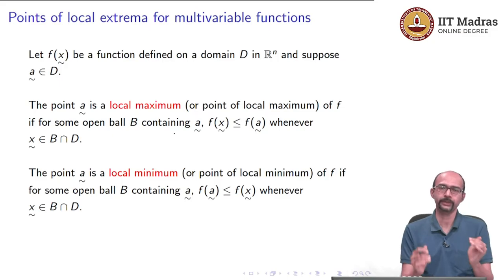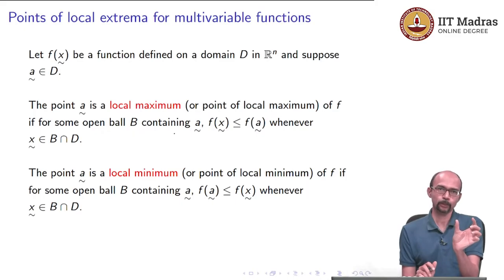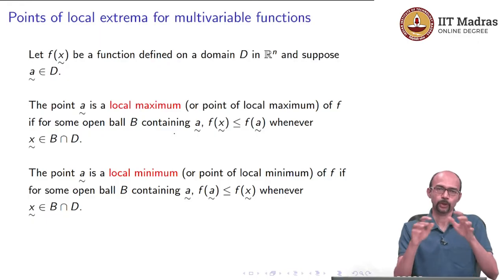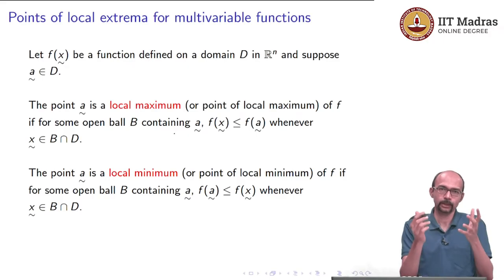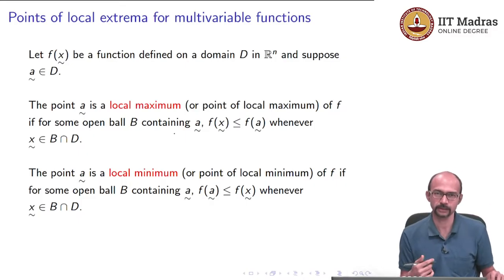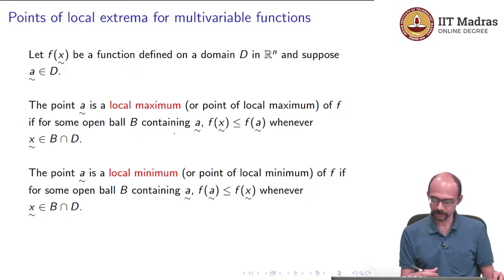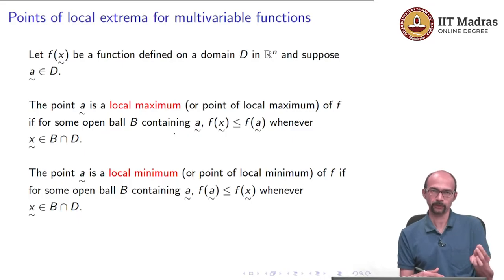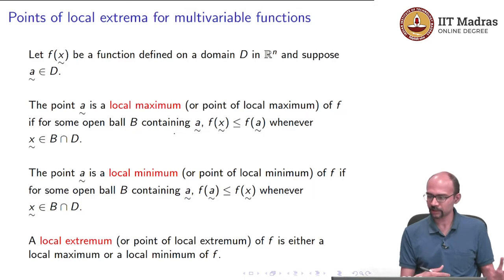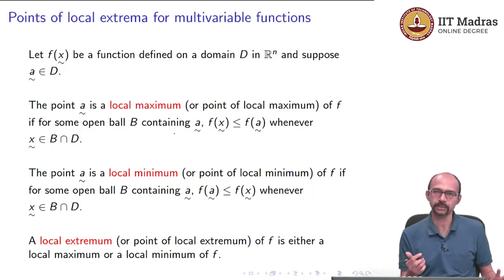For one variable we had open intervals — if on a small open neighborhood the point has the least or largest value. Here instead of intervals we have open balls. In R² you have a disc, in R³ you have a ball (a sphere), and in Rⁿ it is all points within a fixed distance from a center point. Local maxima are locally maximum values, local minima are locally minimum values, and a local extremum is either a local maximum or a local minimum.